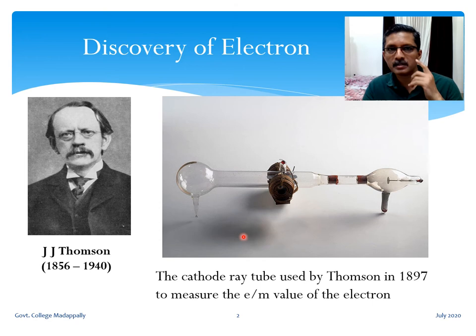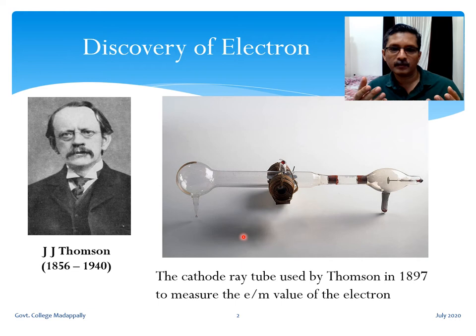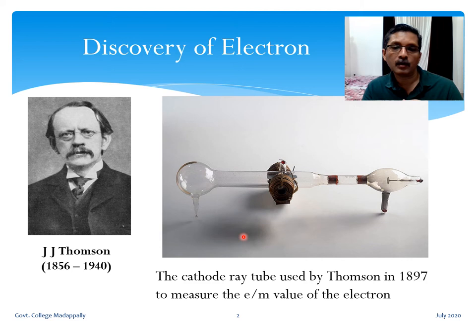In the 1870s, William Crookes, an English physicist, modified the Geissler tubes. The main modification was that the pressure inside the Crookes tube could be made very low — about one millionth of one atmosphere. This very low pressure could be achieved in the Crookes tube. Thomson redesigned this Crookes tube to suit his purpose.